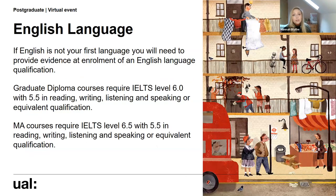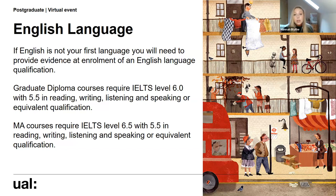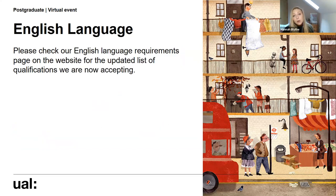If English isn't your first language, you'll need to provide evidence at enrolment of an English language qualification — meaning you can apply before you've completed this. For MA Fine Art Drawing we're looking for IELTS level 6.5 overall, with 5.5 in each of the skills: reading, writing, listening and speaking. We do accept other qualifications beyond IELTS — please check our English language page, which we're constantly updating.